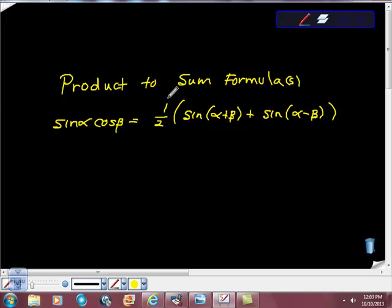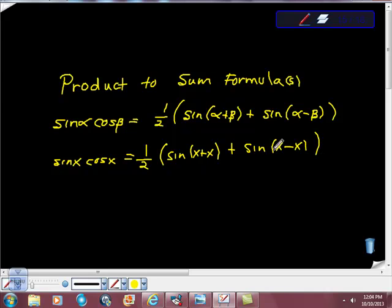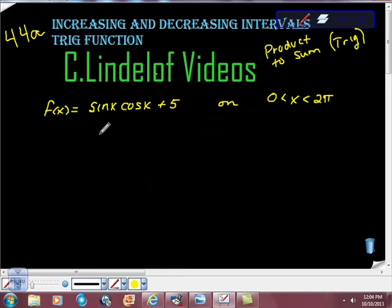We're going to use this product-to-sum formula. We have sin x cos x, so that would equal 1/2(sin(x+x) + sin(x-x)). This is a trig formula. We know that sin(x-x) is sin(0), and sin(0), if you look at your unit circle, is 0. So that goes away. So we end up being able to rewrite this as 1/2 sin(2x). So we can get this pretty quickly.